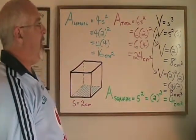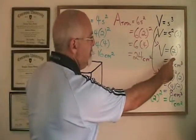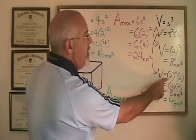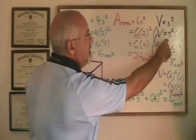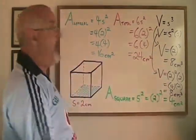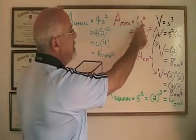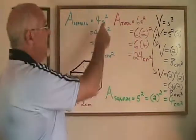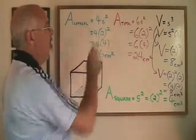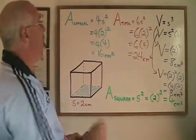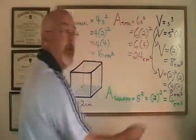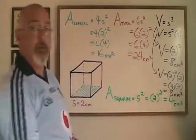So we can see that in each case, I'm replacing s squared with 2 squared. In each case, I can replace s squared with 4 because I know that's what 2 squared is equal to.